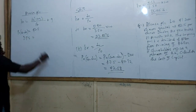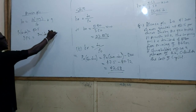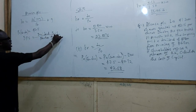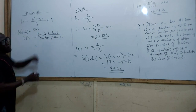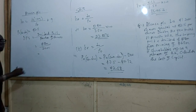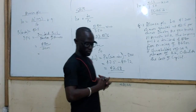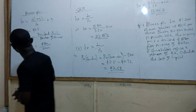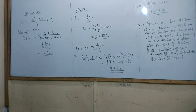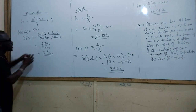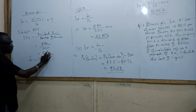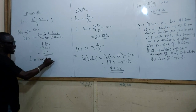Let's calculate the dividend per share first. Dividend paid is $18 million, and the number of shares is 20 million. So dividend per share equals 18 million over 20 million, which gives $0.90 — that is 90 cents. This is our D0.